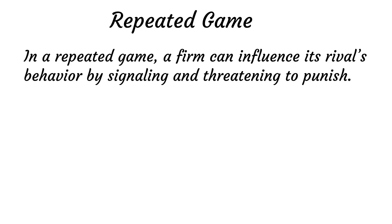In a repeated game, a firm can influence its rival's behavior by signaling or threatening to punish. Collusion or cooperation is therefore more likely in a game that will continue forever or one that will end at an uncertain time.